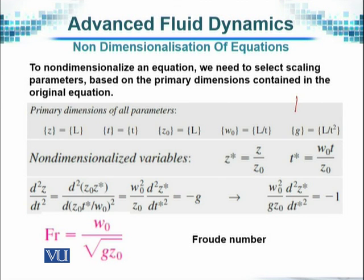And the non-dimensionalized parameters or variables are normally denoted by giving an asterisk, as you can see here on top of the alphabet. And that will be equal to the original variable divided by the scaling variable and the resultant non-dimensional parameter is shown with an asterisk sign on top of it.